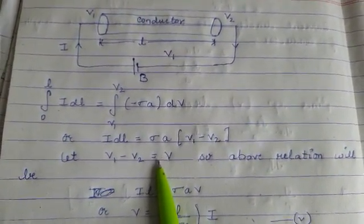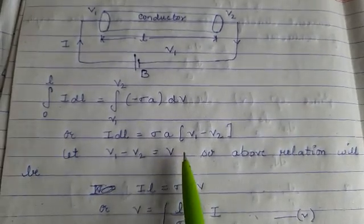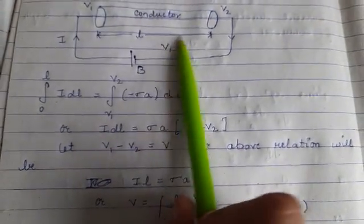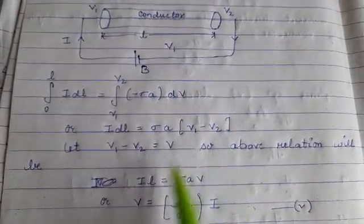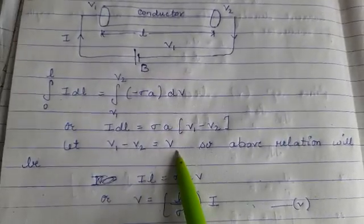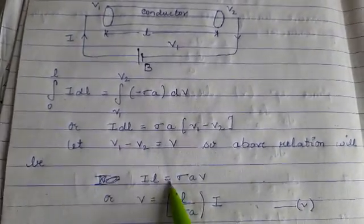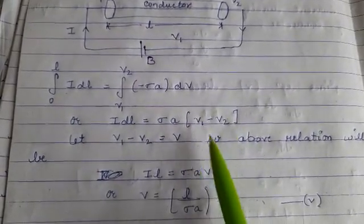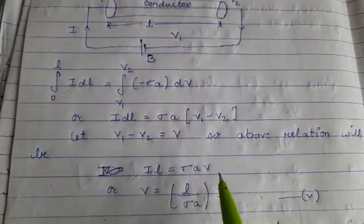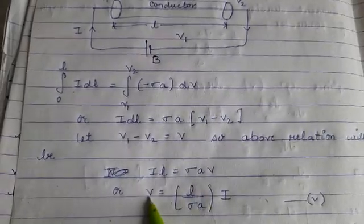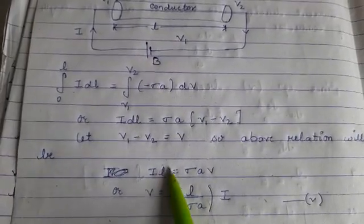As we know that V1 minus V2 is equal to V, where V1 minus V2 is the potential difference across two ends of conductor, so this relation will be I·L equals sigma A·V. If I'm going to calculate the value of V, it will be L upon sigma A into I, marked as equation number five.